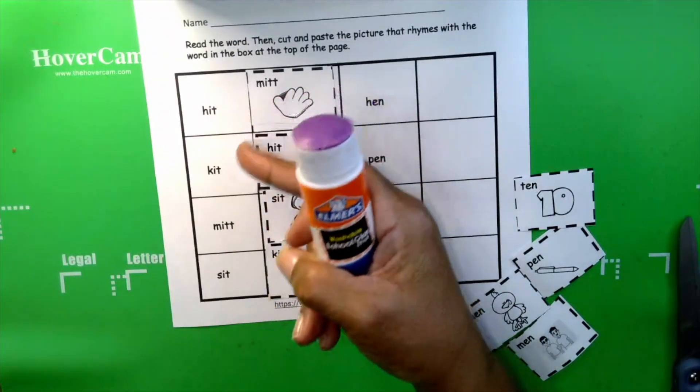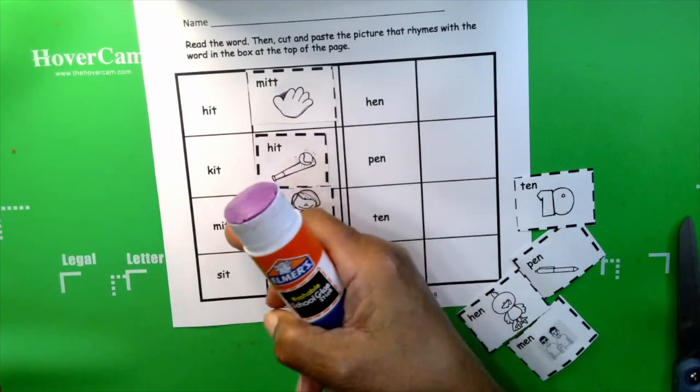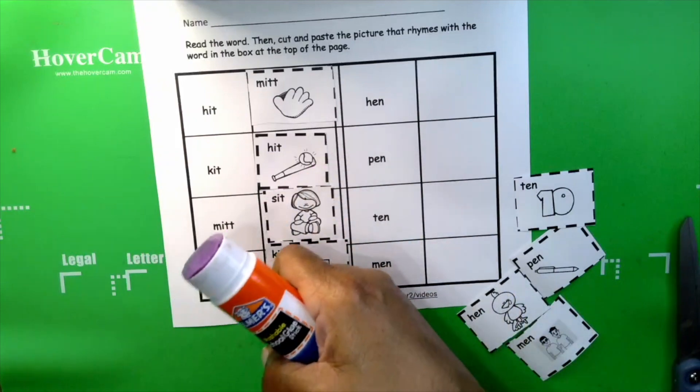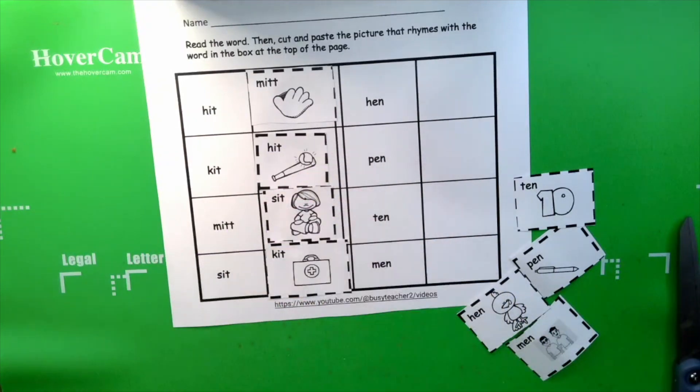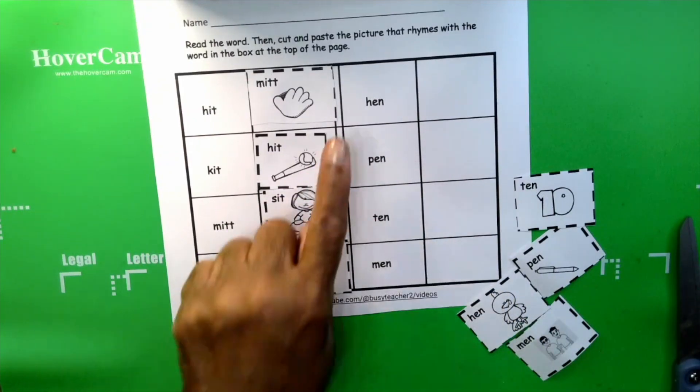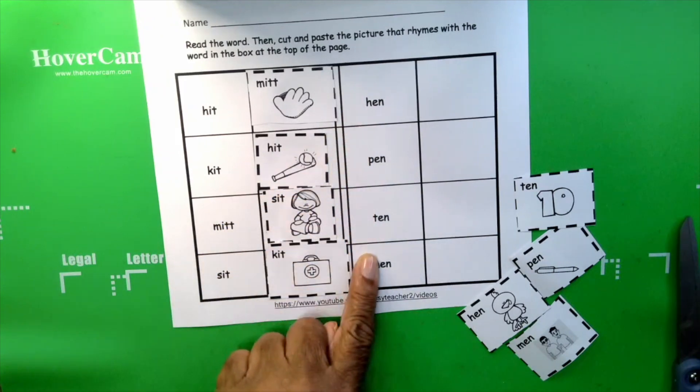Mitt, hit, mitt. Kit, hit. Mitt, sit, sit, kit. They all rhyme. Now, let's do this side, the 'en' words.